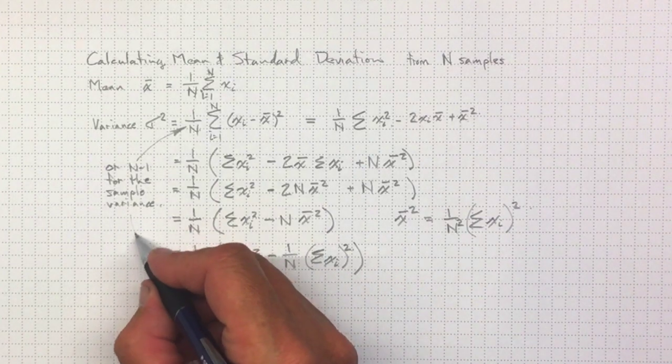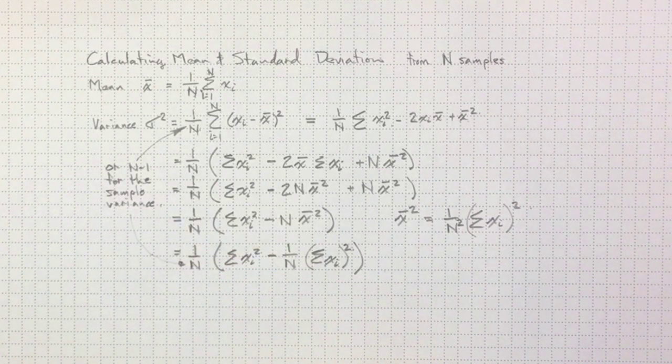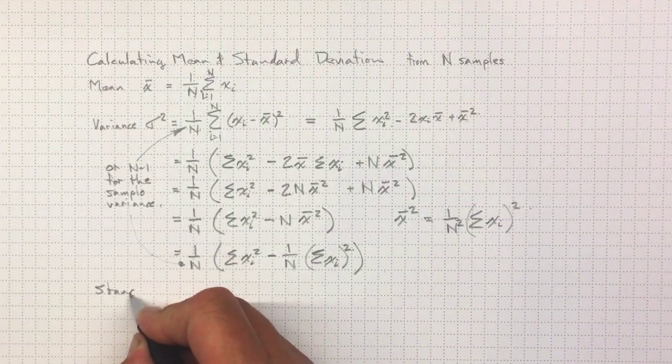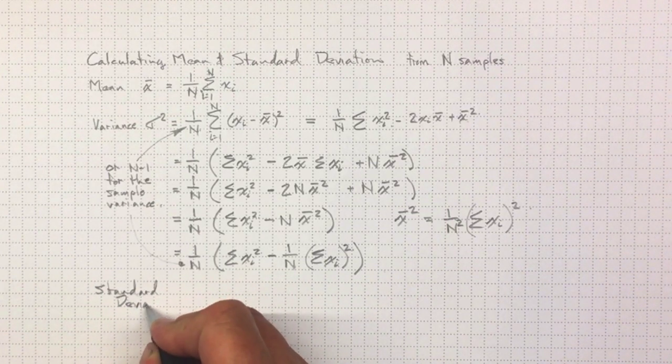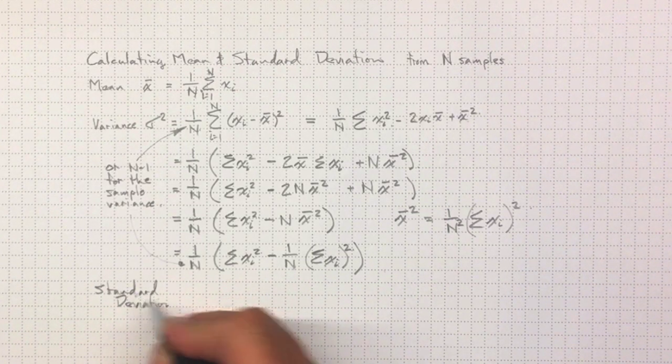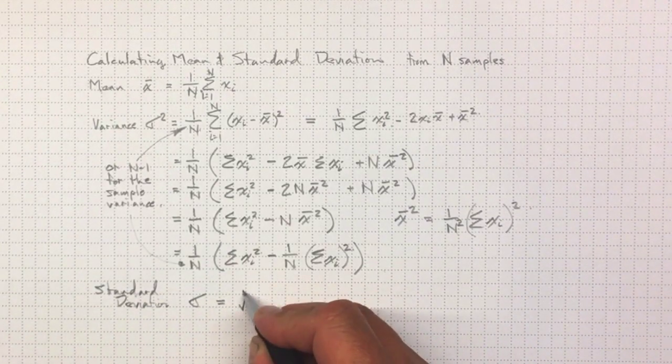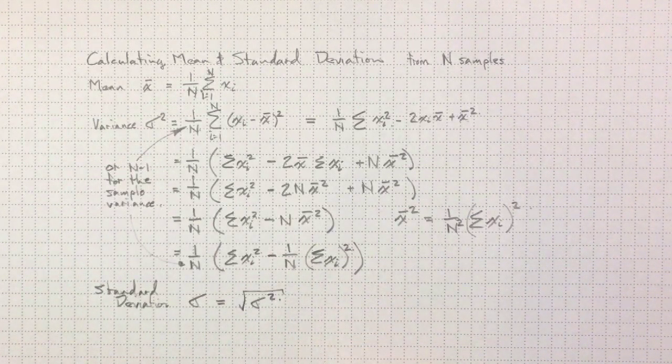And that's the same n as this one down here when we eventually get there. And finally, the standard deviation is just the square root of the variance. And its symbol is σ, and it's the square root of σ², as you would expect.